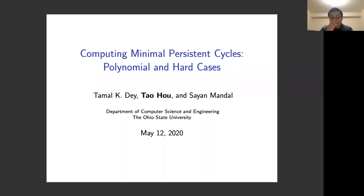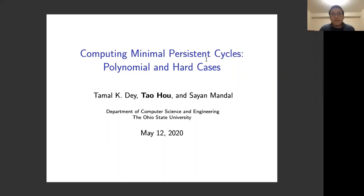This work is about persistent cycles, which are representative cycles for persistent homology. We are focusing on the minimal ones because we believe the minimal ones will give you a good geometrical property and will give you a compact description. As the title suggests, we present some cases which are NP-hard and some other cases which can be computed in polynomial time.